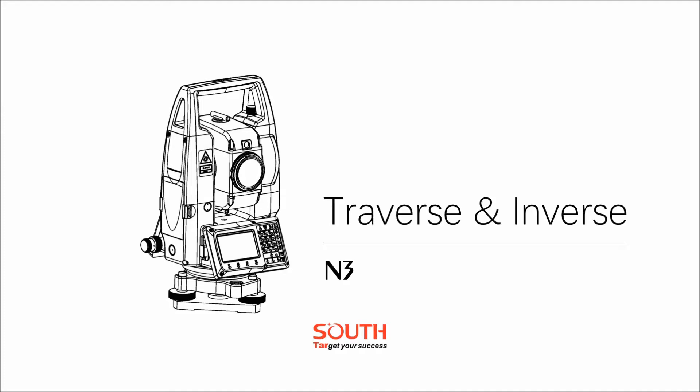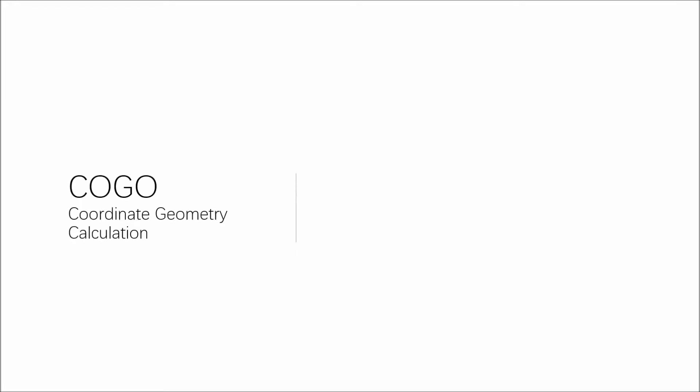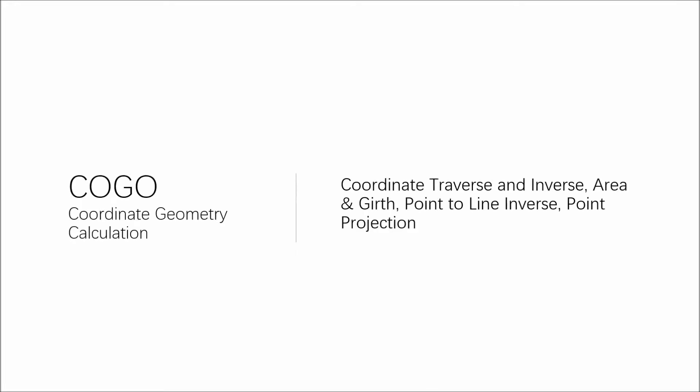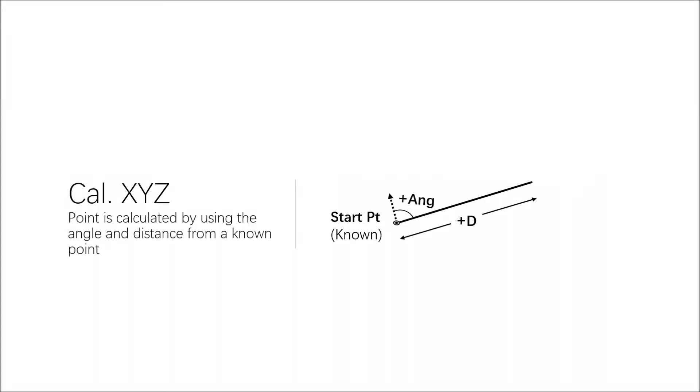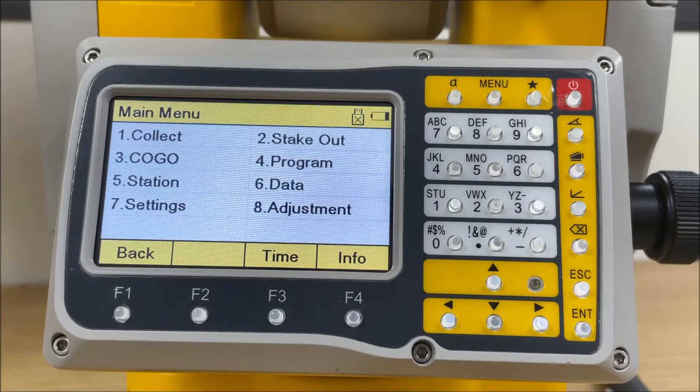Today, we will look at the inverse and traverse from COGO. COGO is the abbreviation of Coordinate Geometry Calculation. Calculate XYZ, also known as Traverse, which calculates the coordinate of a point by using angle and distance offset from a known point.